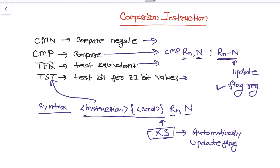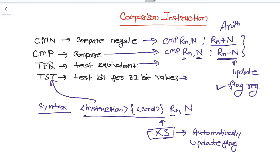In the same way, for Compare Negate, if we write CMN Rn and N, in this case it adds Rn plus N, and as per the result it updates the flag register. So CMP and CMN are tested with arithmetic operations, while TEQ and TST are tested with logical operations.